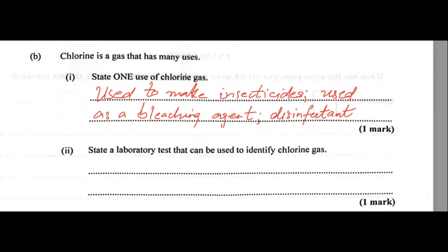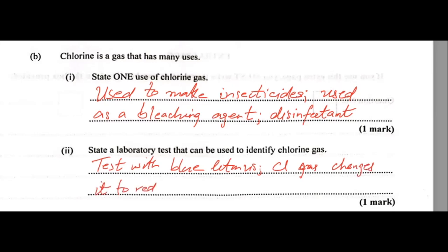Part two: state a laboratory test that can be used to identify chlorine gas. Chlorine gas changes blue litmus to red, then decolorizes it. So: Cl₂ gas changes blue litmus to red, then decolorizes it.